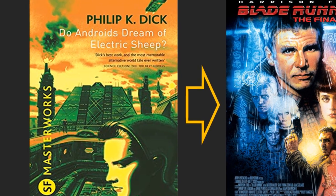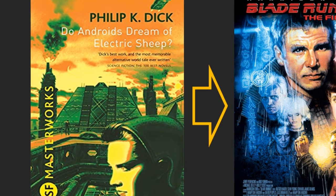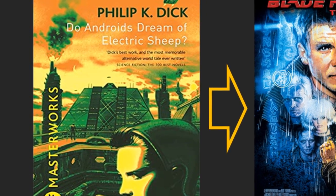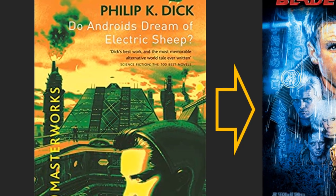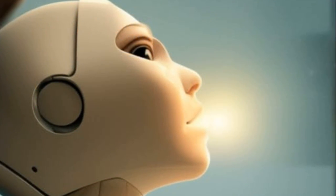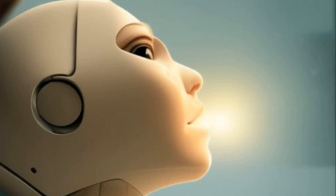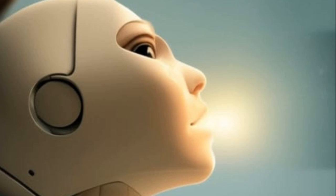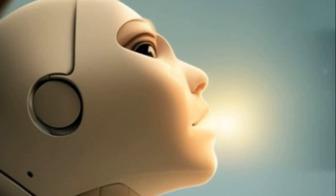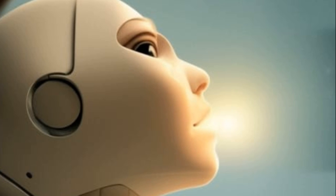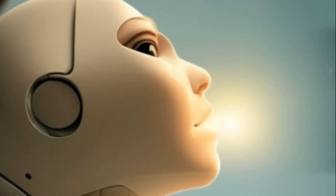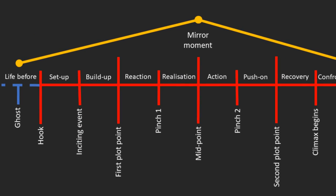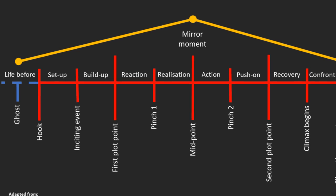On the face of it, it's a simple near-future noir story about a detective who has to hunt down rogue androids. In practice, it's so much more. What does it really mean to be alive? Does our dependence on technology make us less human? PKD explores these themes without the book ever feeling preachy, and he does so in an incredibly concise 260 pages. In this video, I'm going to break down how PKD achieves this, so you can use the same techniques in your writing.